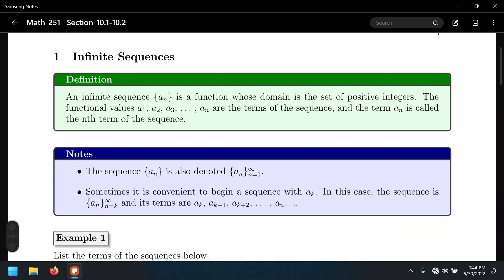A sequence happens to be just another function, but it's one function for which the domain is only the set of natural numbers. What are the natural numbers? 1, 2, 3, 4, 5, etc., all integers.